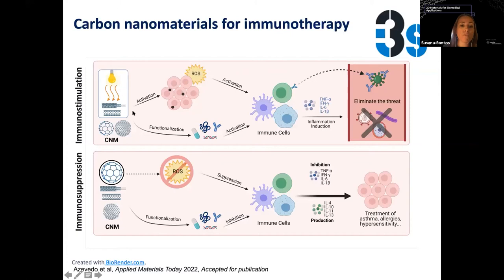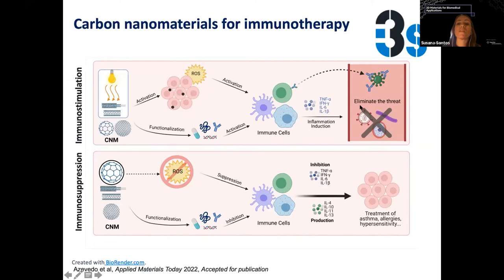In more detail, for immunostimulation, carbon materials alone or in combination with phototherapy or radiotherapy can be used to activate reactive oxygen species production in immune cells. They can also be functionalized with different drugs to activate these cells, leading to the production of pro-inflammatory cytokines and activation of B cells that can produce antibodies to fight viruses — as we've heard so much about in these last couple of years with COVID — or to eliminate any kind of pathogen or cancer cells.